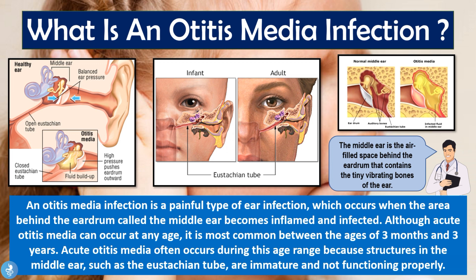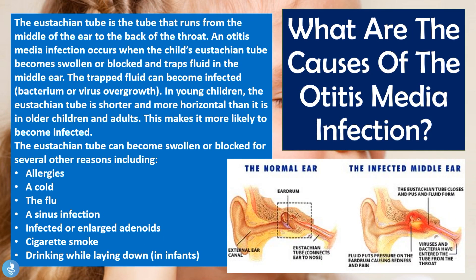Now let's explore the causes of the otitis media infection. The eustachian tube is a tube that runs from the middle ear to the back of the throat. An otitis media infection occurs when the child's eustachian tube becomes swollen or blocked and traps fluid within the middle ear — and that trapped fluid can then become infected by bacteria or virus overgrowth. In young children, the eustachian tube is shorter and more horizontal than in older children, so infants tend to be more likely to develop such an infection.